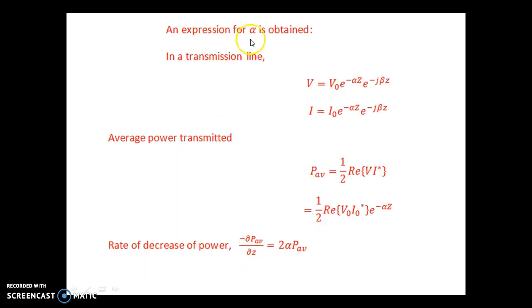An expression for alpha is obtained. We will take example of a transmission line. In a transmission line V is equal to V0 e power minus alpha z e power minus j beta z. I is equal to I0 into e power minus alpha z into e power minus j beta z.